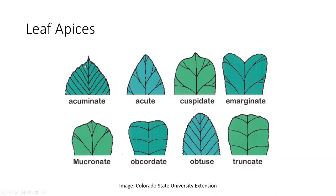The leaf apex is the tip of the leaf — the terminal point — and this can be helpful in differentiating between closely related species. You may see some of these same terms when we discuss leaf bases. Acuminate means that the sides curve up toward the apex. Acute has an angle of less than 90 degrees at the tip. Mucronate would be a short, abrupt point along the midvein. There can be a rounded tip. Emarginate means it has a notch in the margin. Just different things to look for.